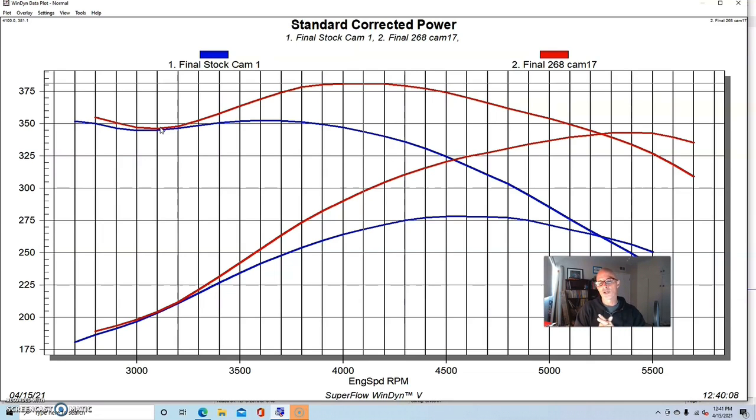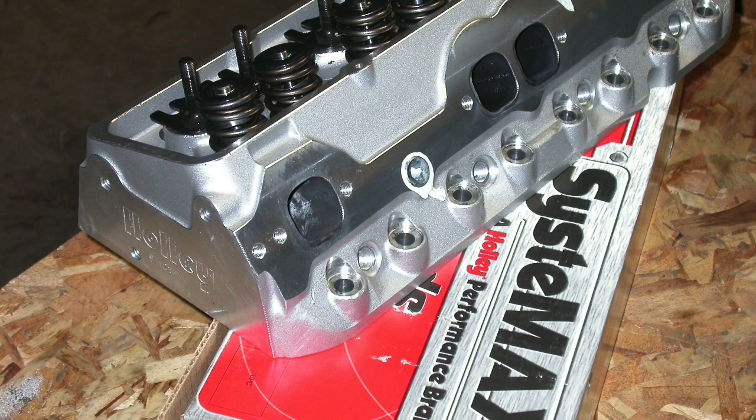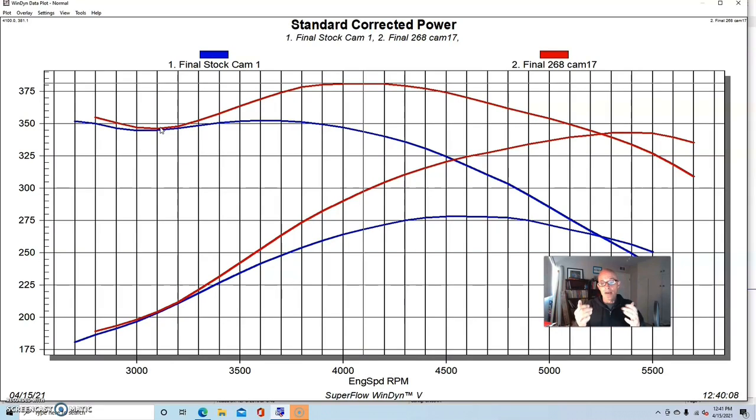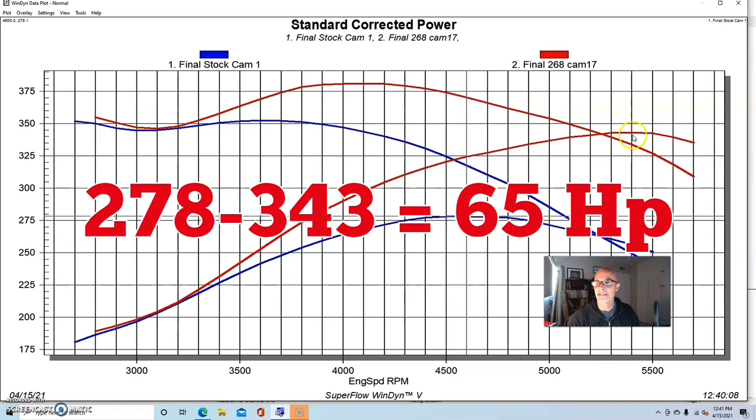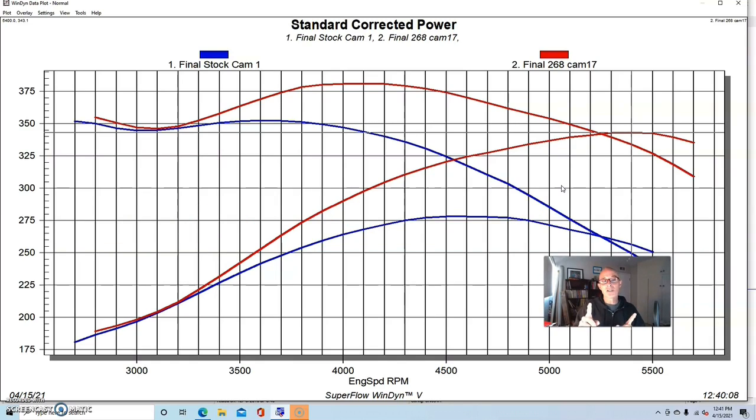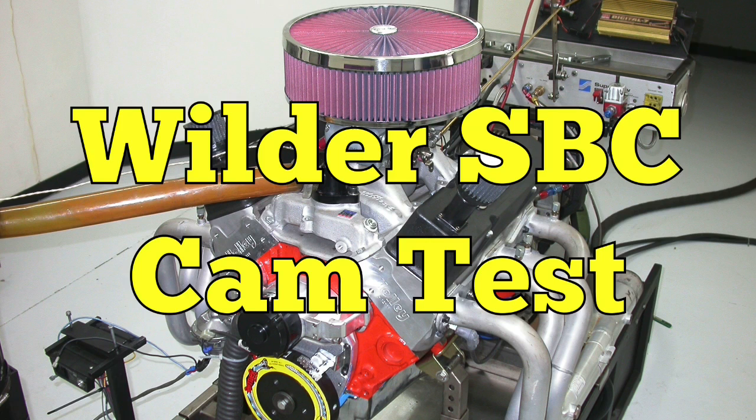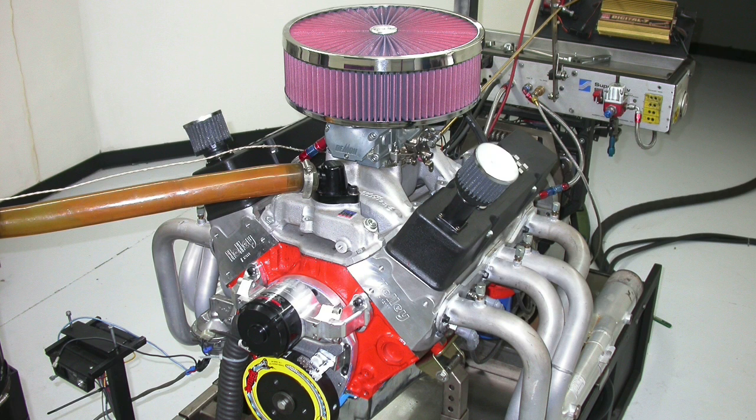Now let's take a look and see what happened when we ran this same upgrade on a slightly wilder combination with more head flow and compression. We can see if the amount of power that we gained on the wilder combination compares to this one, where we had gone from 278 to 343 horsepower, which is a gain of 65 horsepower.